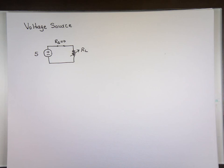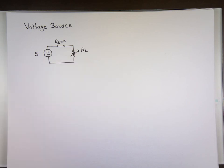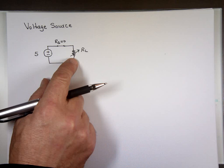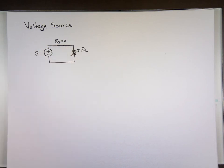That is not true — that's not the case. If R sub L is adjustable and you bring that value to zero, that means you have an infinite current. And there is no source on this planet that gives you an infinite current supply.